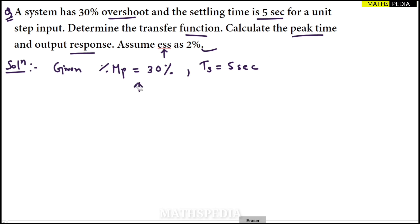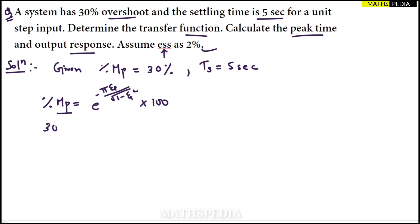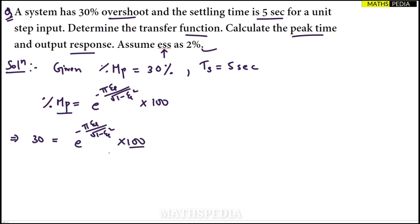We start with Mp. The percentage Mp formula is: %Mp = e^(−π·ζ / √(1−ζ²)) × 100. Since the percentage Mp is given as 30, we write: 30 = e^(−π·ζ / √(1−ζ²)) × 100. Dividing both sides by 100 gives 0.3 = e^(−π·ζ / √(1−ζ²)).